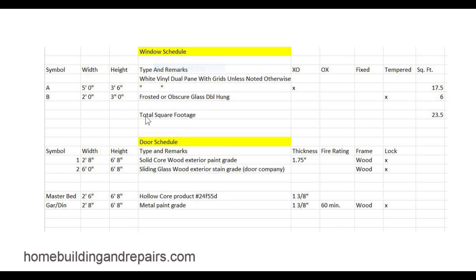Total square footage is going to be common. Some building departments are going to require energy calculations — maybe a Title 24. I know the state of California does. If that's the case, you might need energy-rated windows — dual pane with some type of gas in between them to provide your home a little more insulation.